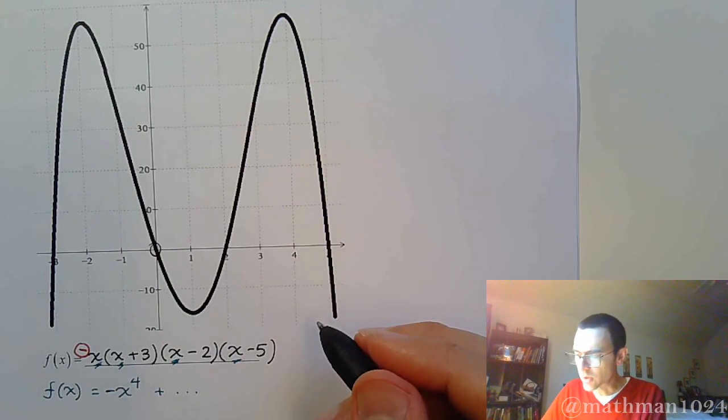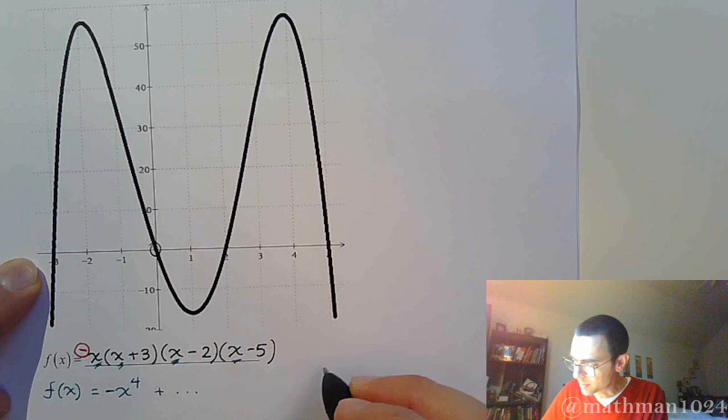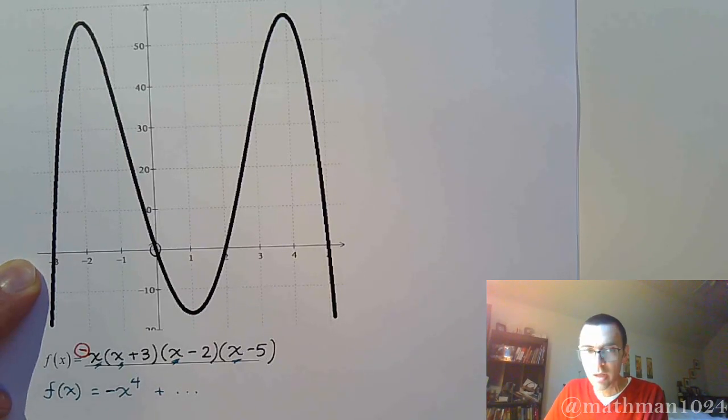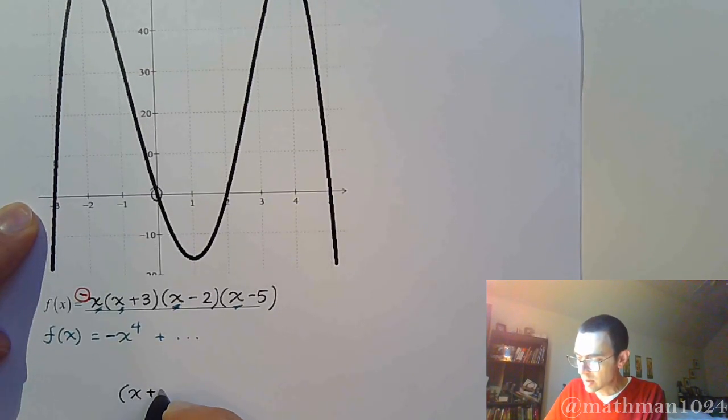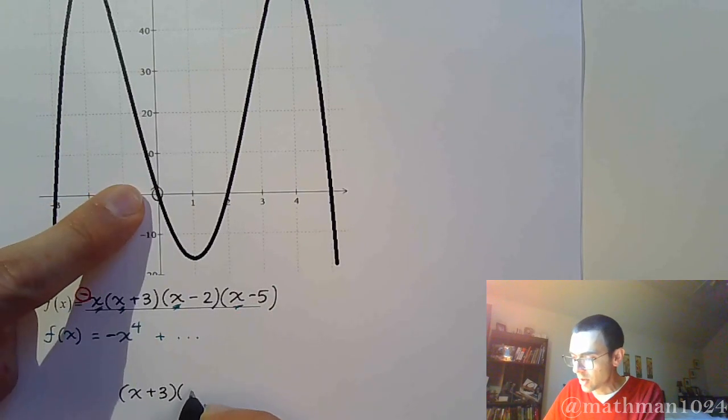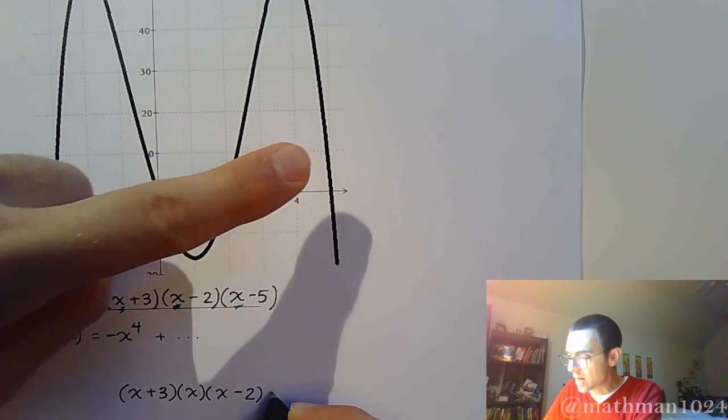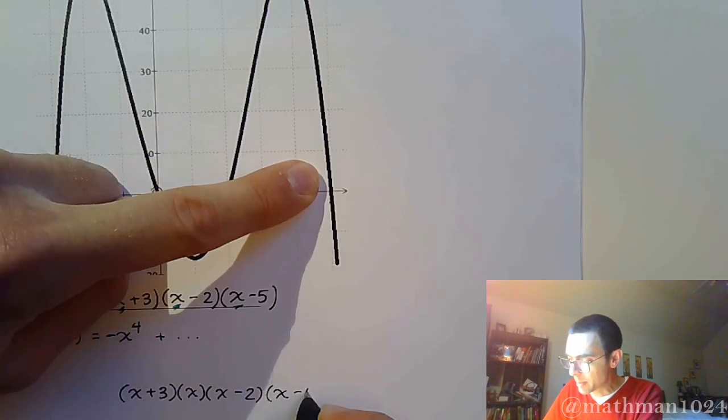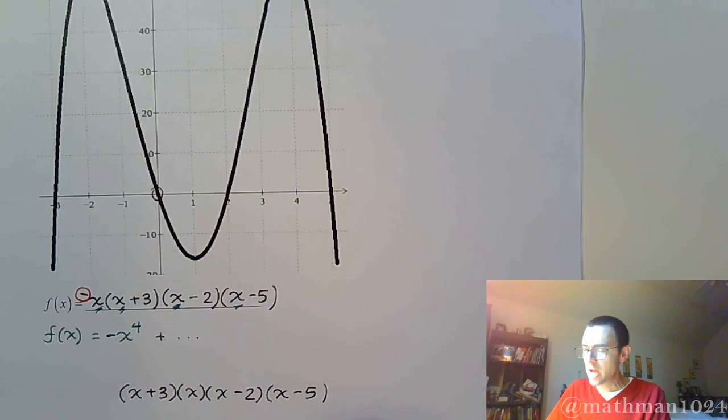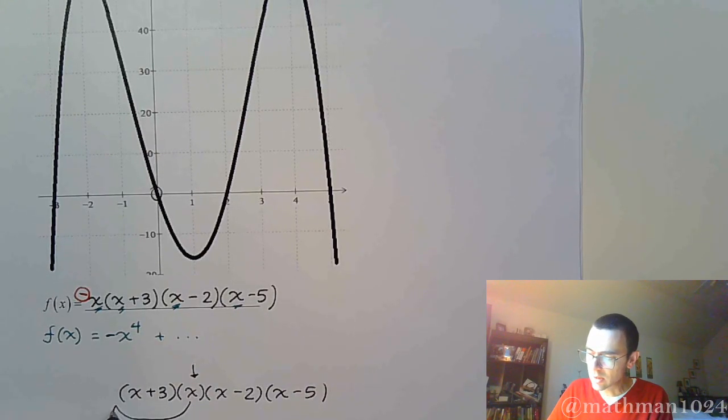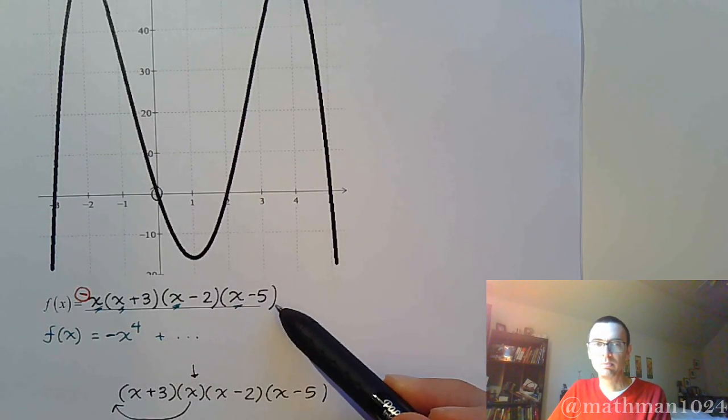Now sometimes students will do this. They just kind of go straight across and they say, okay, well, this is going to be, you know, they write x plus 3. They write just x, and then x minus 2, and finally x minus 5. But the thing about that is that you don't want to leave single-term factors like that in the middle, and so it's best to just kind of write these guys in front, like I have up here.